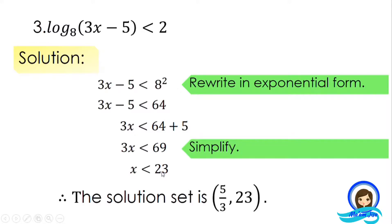So the solution set is from 5/3 to 23, excluding 5/3. Recall that we set the expression greater than 0 to find that x must be greater than 5/3 for the expression to be defined. That value of 5/3 becomes our starting point. Therefore, the solution set is (5/3, 23), using parentheses since neither endpoint is included.